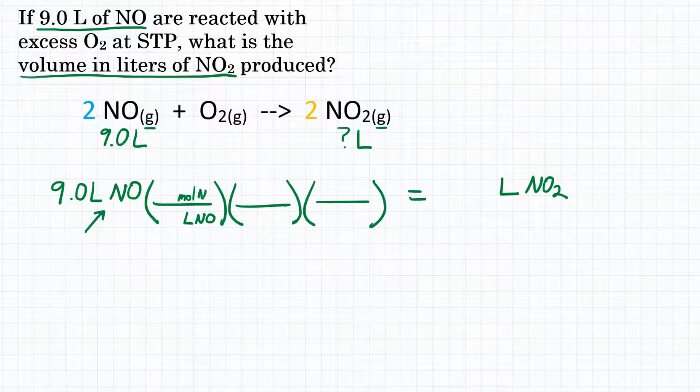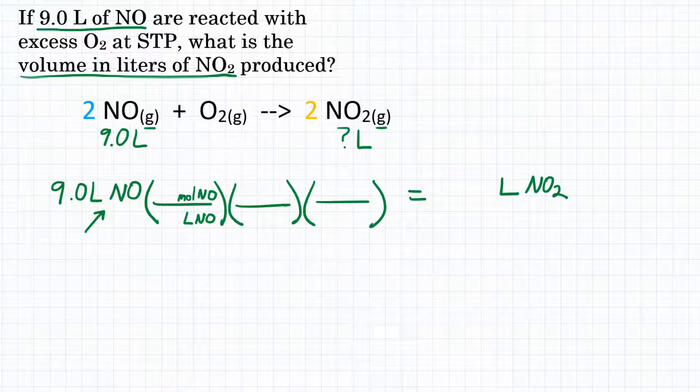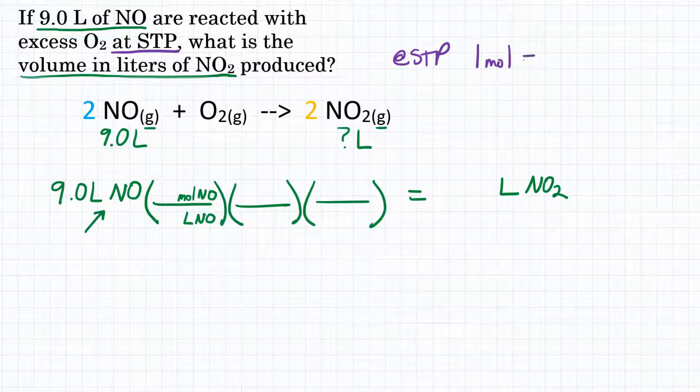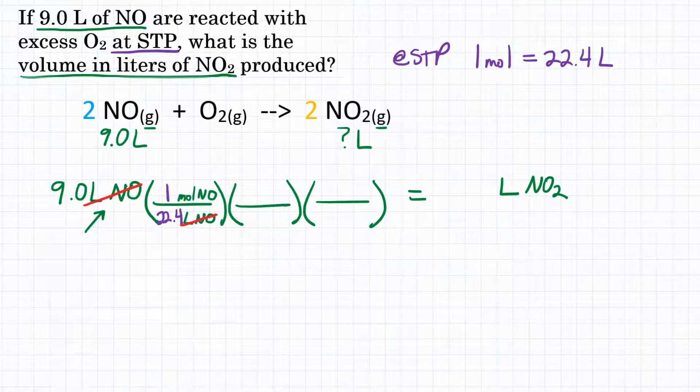So we want to get to moles of NO. I need to know the relationship between liters and moles of NO, also called the molar volume. Well, the problem says we are at STP, standing for Standard Temperature and Pressure. And we know at STP, one mole of any gas is 22.4 liters. So that's what we're going to use for our first conversion factor, where one mole will go on top and 22.4 liters will go on the bottom. Liters of NO are going to cancel because it's on top and bottom.